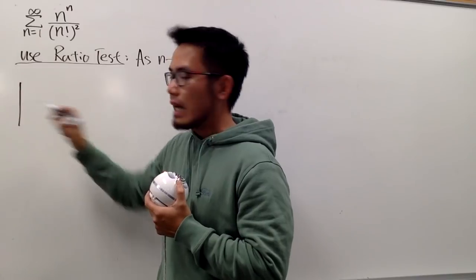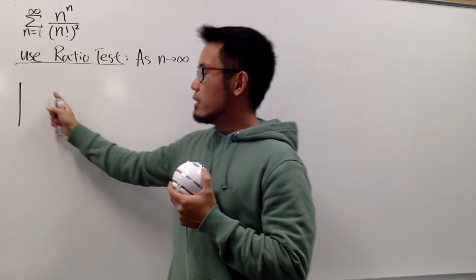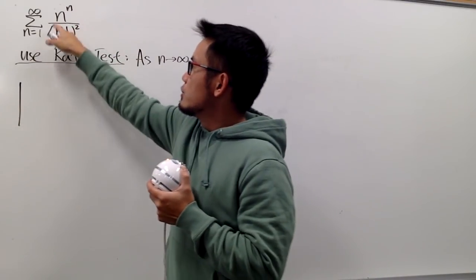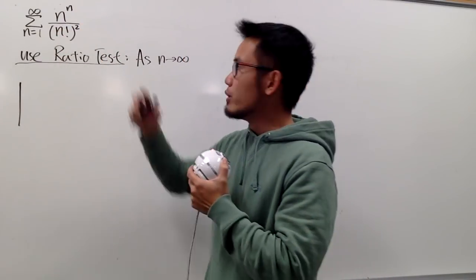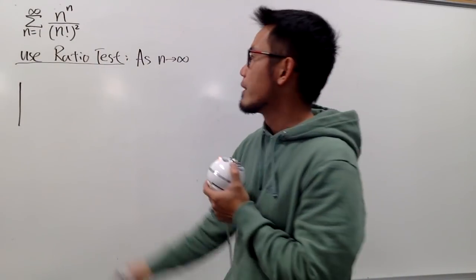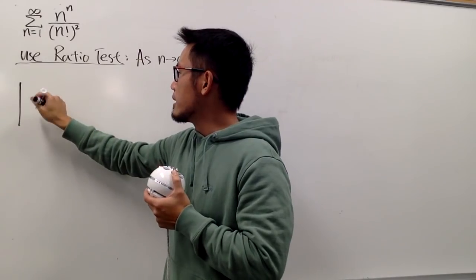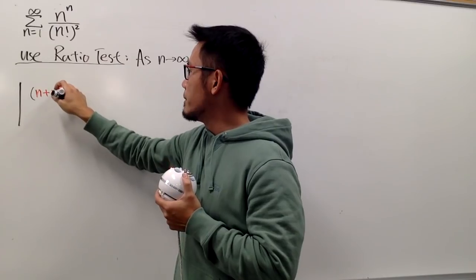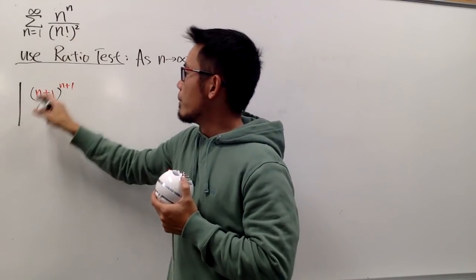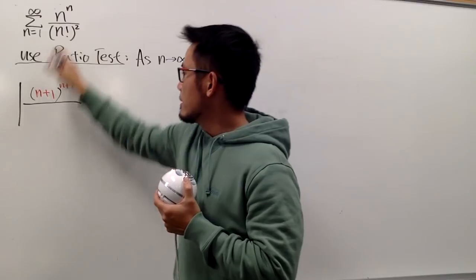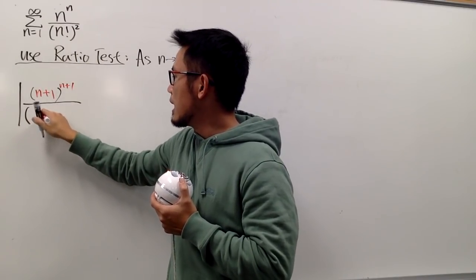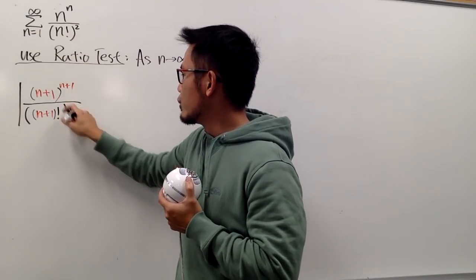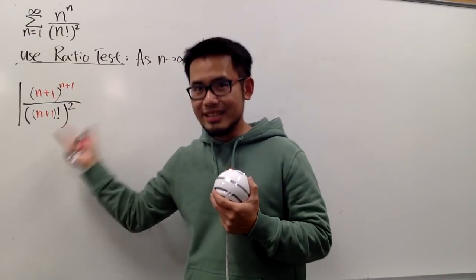First we open the absolute value, and the first thing we put down is a_{n+1}. This is your a_n — just go ahead and change all the n's to n+1. So I see this n, it becomes n+1, put a parenthesis around it, and then this power becomes n+1 as well. Then we divide by: this n becomes n+1, put a parenthesis, and then we have that factorial, and then to the second power. This is a_{n+1}.